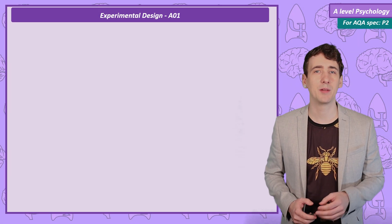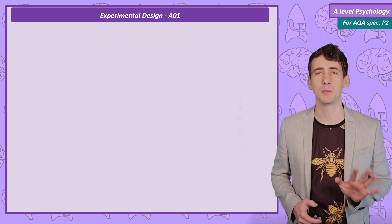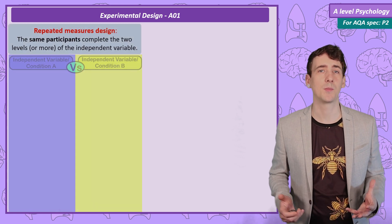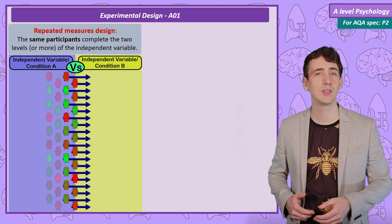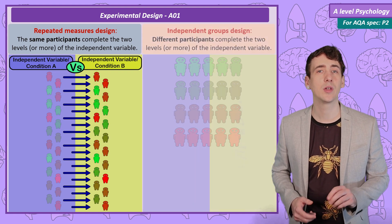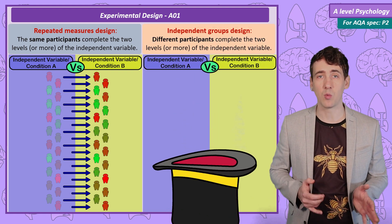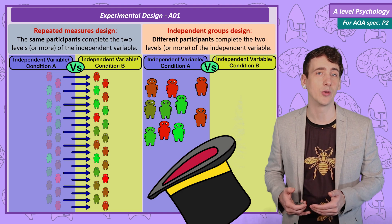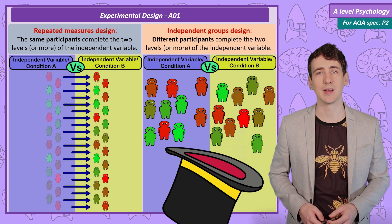I'm going to cover two experimental designs first, and they are fairly simple to understand. We can either get all participants to complete both conditions of the experiment, and that's a repeated measures design, or we can randomly split the sample into two groups, get one group to complete condition A and the other group condition B, and that's an independent groups design.